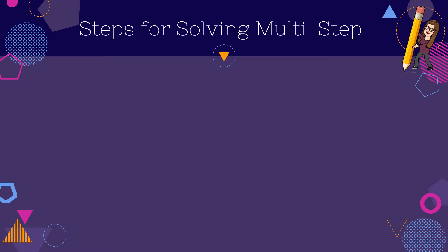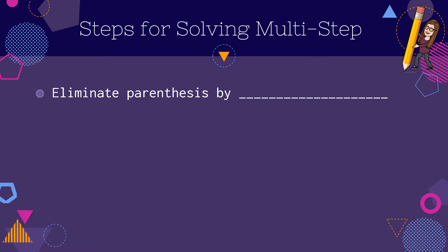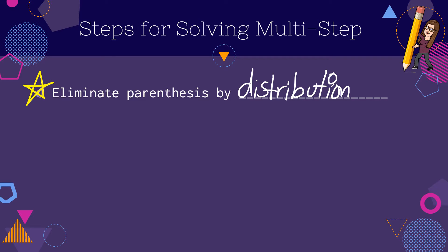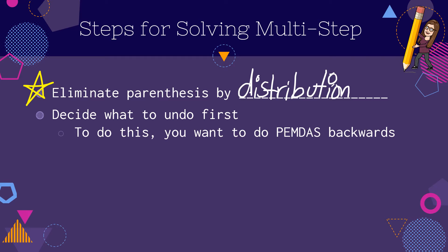First, let's go through the steps for solving multi-step equations with distribution. The first thing we're going to do today — and I'm going to have you put a star by this — is we're going to eliminate parentheses by distribution. We have worked on distribution previously, so if you need more specific help with this, you'll want to see my other video. Then the rest of the steps are repeating what we've been doing: you're going to decide what to undo first, meaning we're going to look at PEMDAS and work backwards.